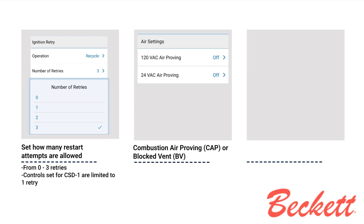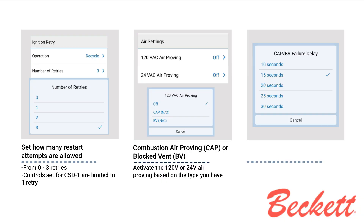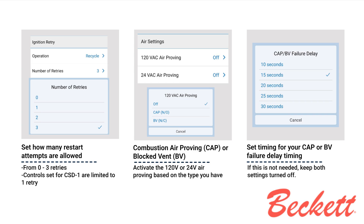If the heating system utilizes combustion air proving or blocked vent, activate the 120-volt or 24-volt air proving based on the type you have. Then set the timing for your combustion air proving or blocked vent failure delay timing. If this is not needed, keep both settings turned off.